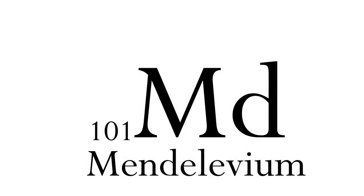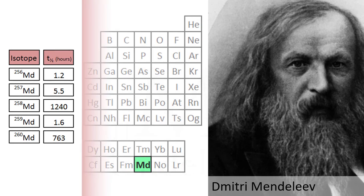101 is Mendelevium, after the father of the periodic table Dmitri Mendeleev. Mendelevium can only be produced in a particle accelerator, where for example Einsteinium may be bombarded with alpha particles to produce up to a million Mendelevium atoms in an hour. 258 is the longest-lived isotope, with a half-life of 51 days.